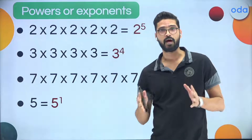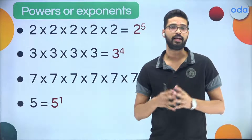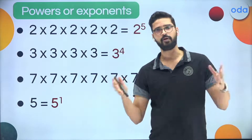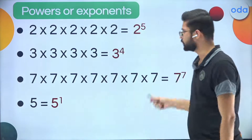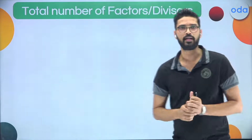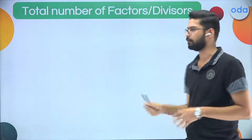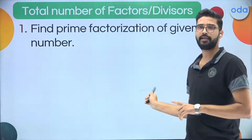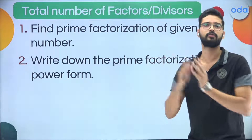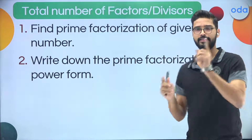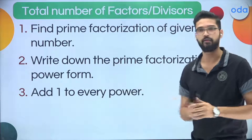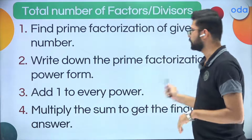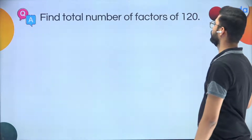Now that prime factorization and the power form of a number are clear, we can find out how many factors any given number has — even for very large numbers like 9 lakh or 90 lakh. There are four steps. Step 1: do the prime factorization. Step 2: write it in powers form. Step 3: add 1 to every power. Step 4: multiply those results. Let's apply this to the number 120.